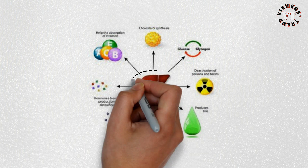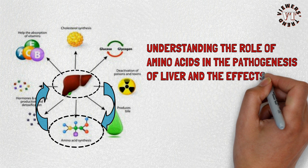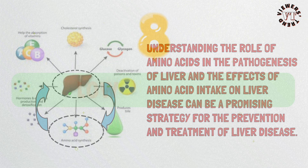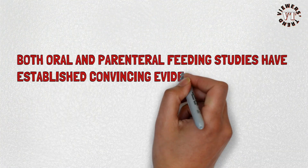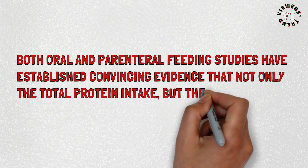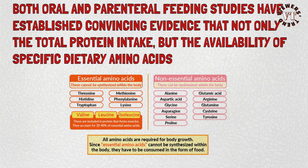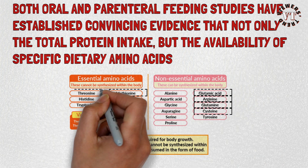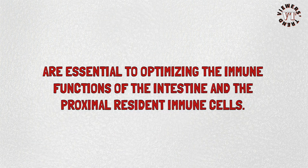Understanding the role of amino acids in the pathogenesis of liver disease and the effects of amino acid intake on liver disease can be a promising strategy for prevention and treatment. 8. Low Immunity. Both oral and parenteral feeding studies have established convincing evidence that not only total protein intake, but the availability of specific dietary amino acids — in particular glutamine, glutamate, and arginine, and perhaps methionine, cystine, and threonine — are essential to optimizing the immune functions of the intestine and proximal resident immune cells.